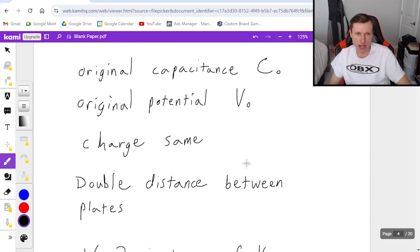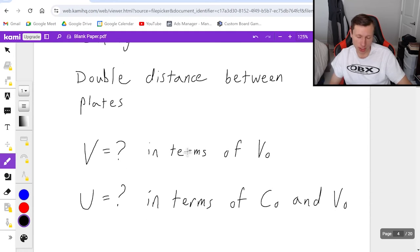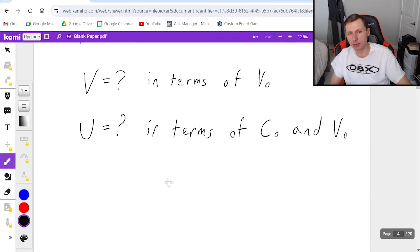And I want that answer in terms of C naught and V naught. Okay, so one more time. Original capacitance, C naught. Original electric potential, V naught. Charge is going to stay the same in this problem, meaning that the electric potential or voltage is the one changing. I'm doubling the distance between the plates. What is the new voltage or electric potential? And finally, what is the new energy?